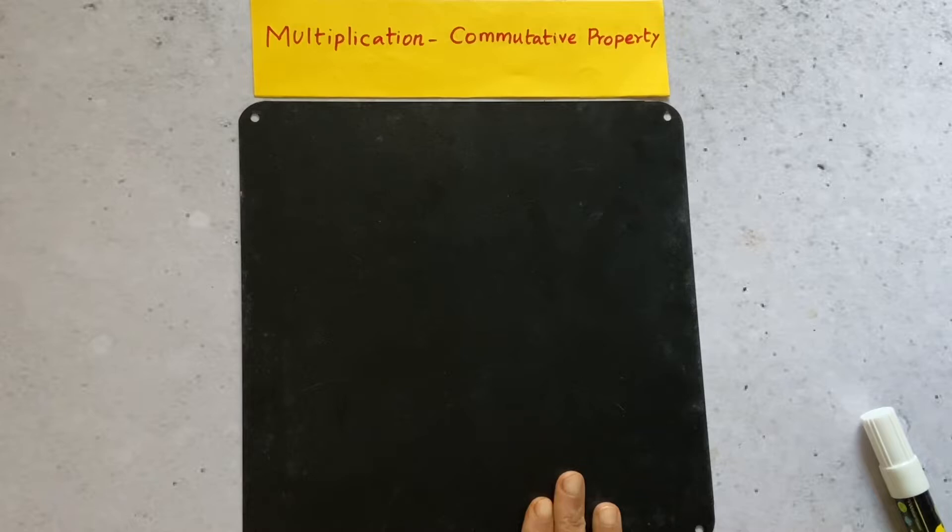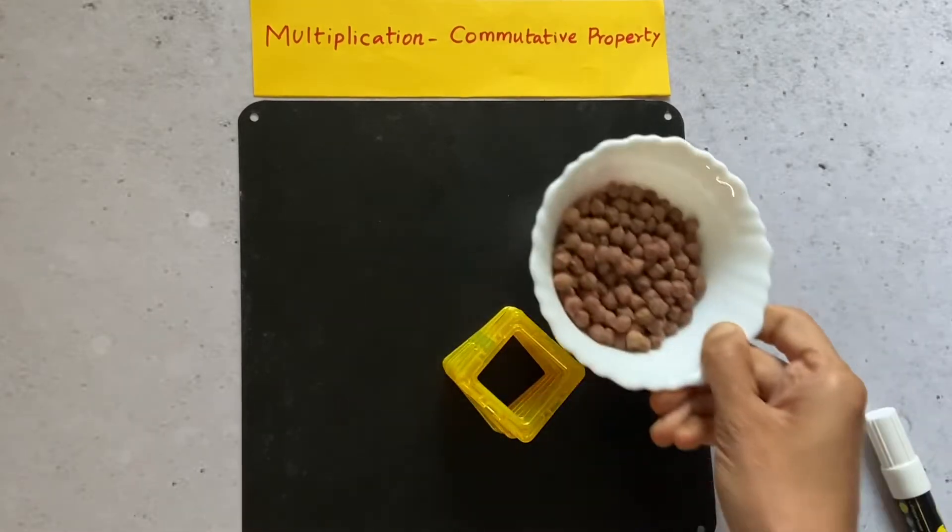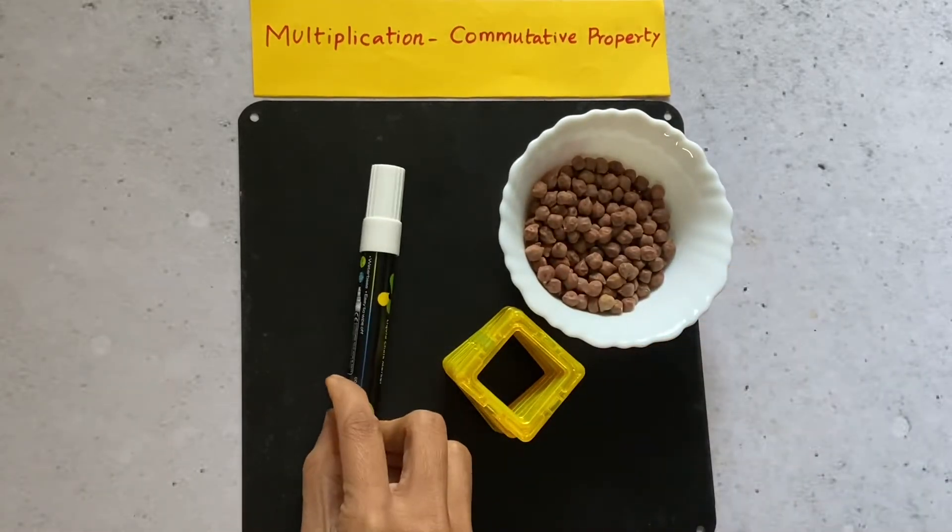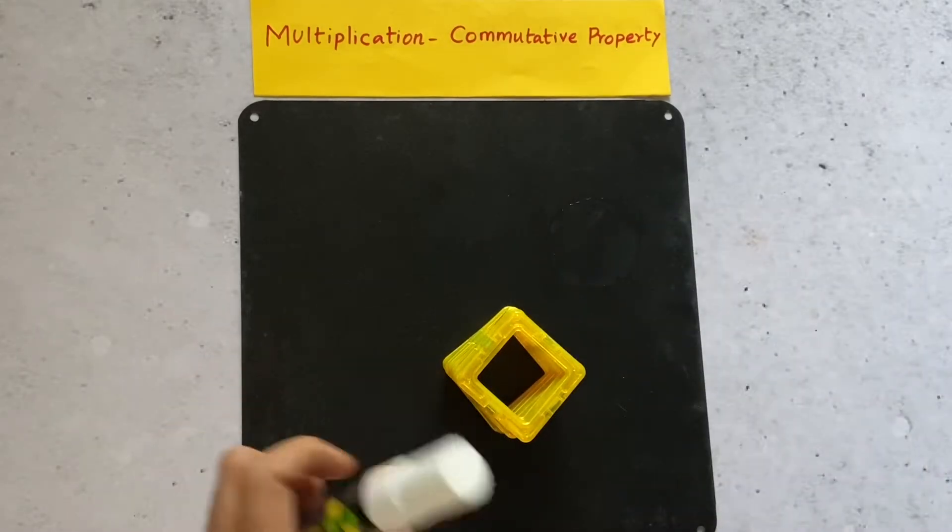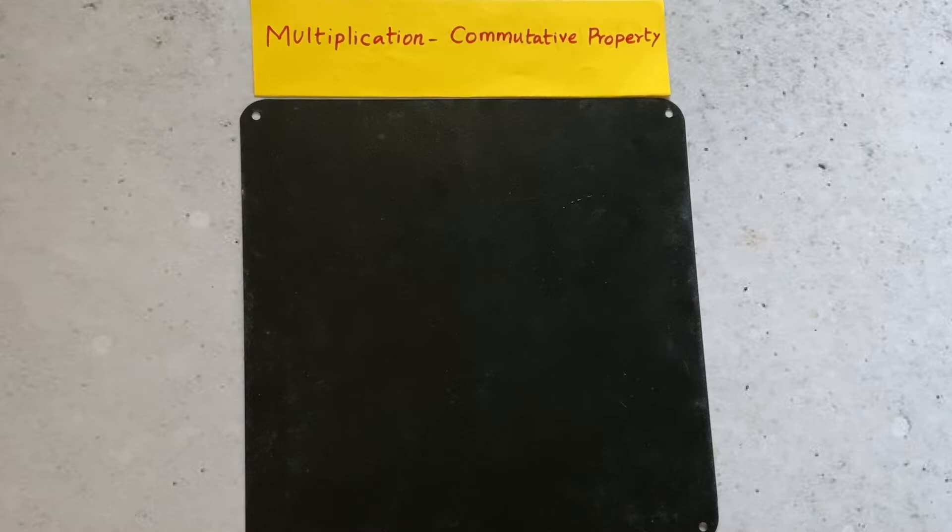To do this activity, here I have this magnetic board, magnetic tiles, and this black china and marker. I'm going to explain multiplication commutative property to my child in a fun way that you can multiply the factor in any order and the product will be the same.